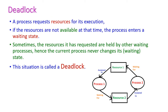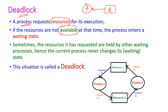What is deadlock? For executing any process, it requires resources. A resource should be assigned to the process; then only the process will be executed. If the resource is not currently available, then this particular process will enter into the waiting state.